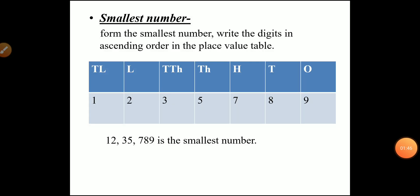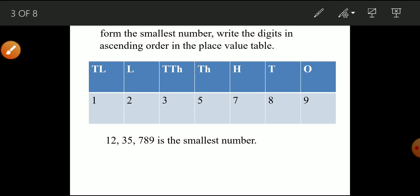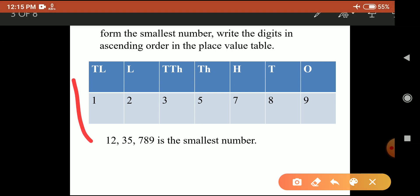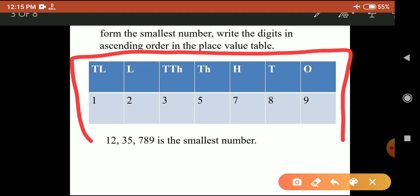Now let's make the smallest number. To form the smallest number, write the digits in ascending order in the place value table. In ascending order, the digit at the highest place is the smallest, and the last digit is the greatest.